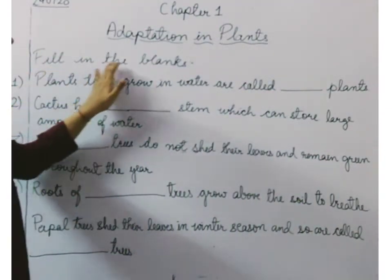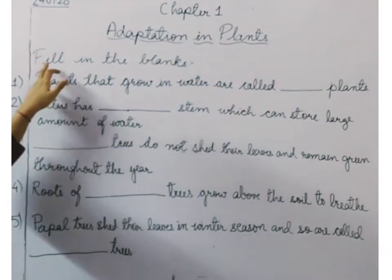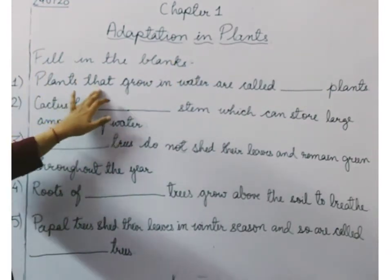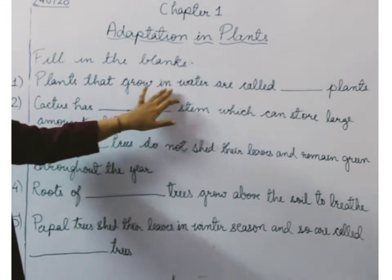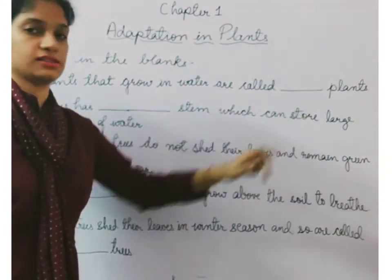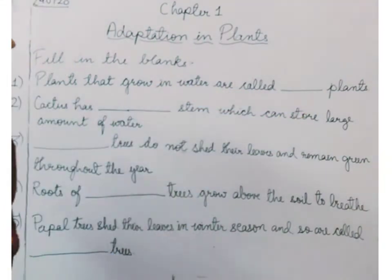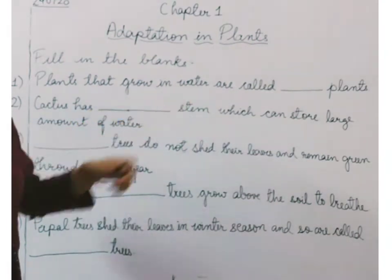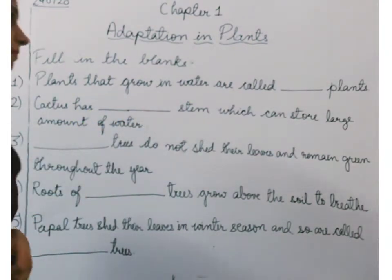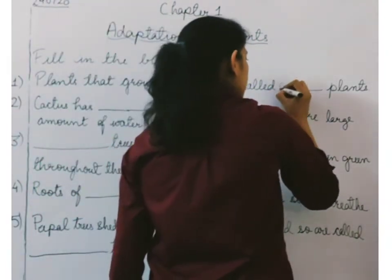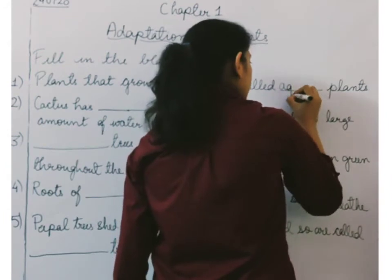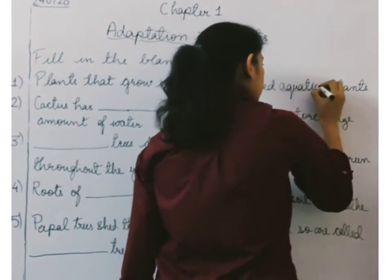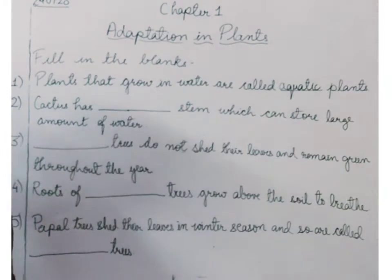First is fill in the blanks. The question is: plants that grow in water are called dash plants. Can you answer it? Plants that grow in water are called aquatic plants. So if you have to write thoroughly, you will be able to answer it — plants that grow in water are called aquatic plants.